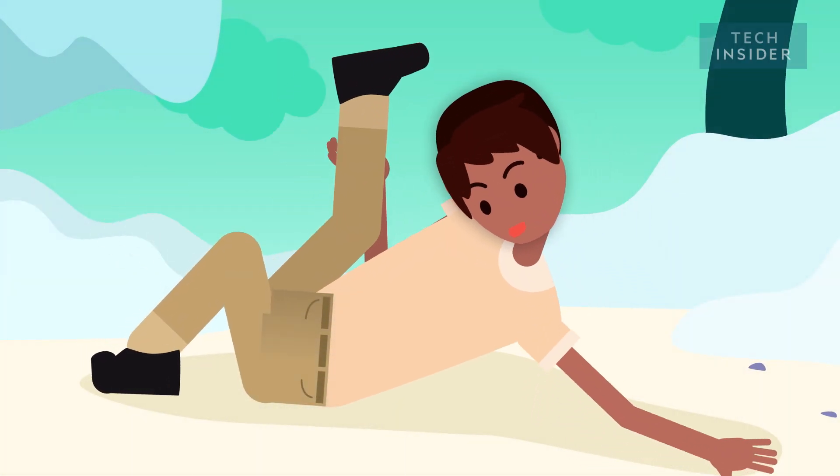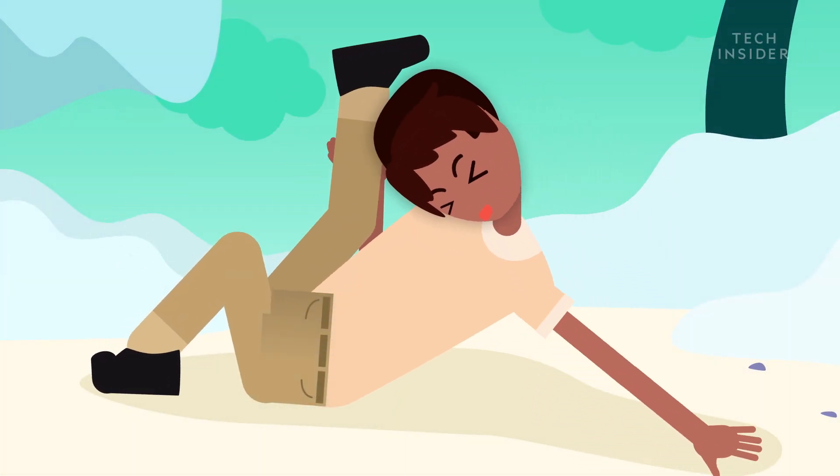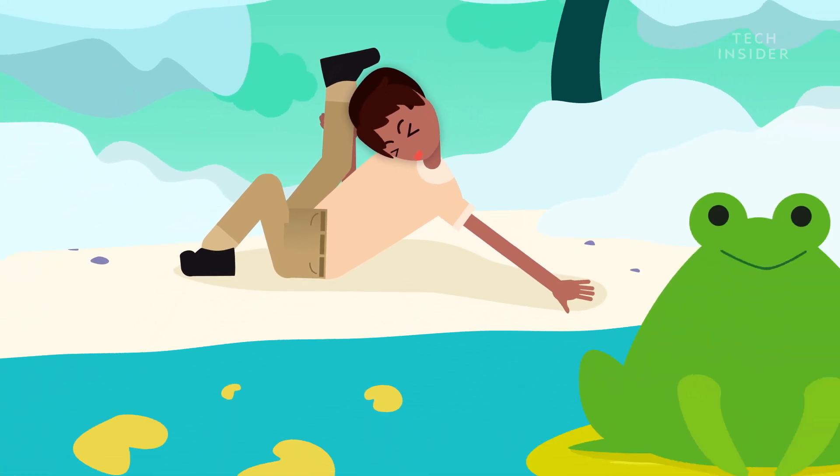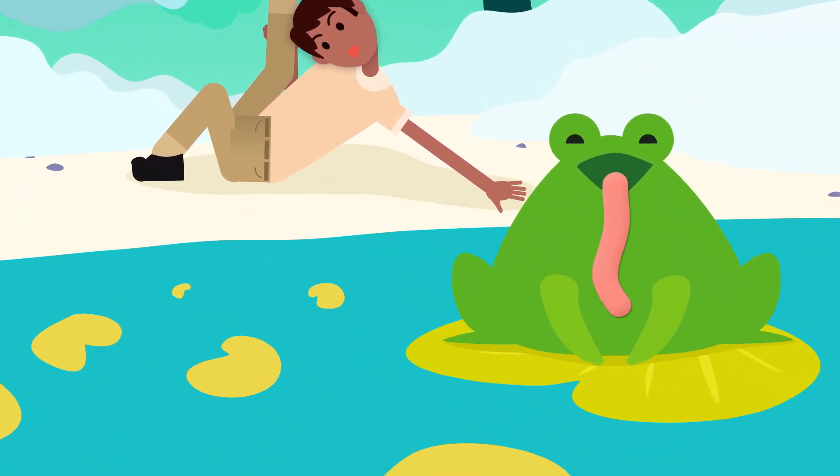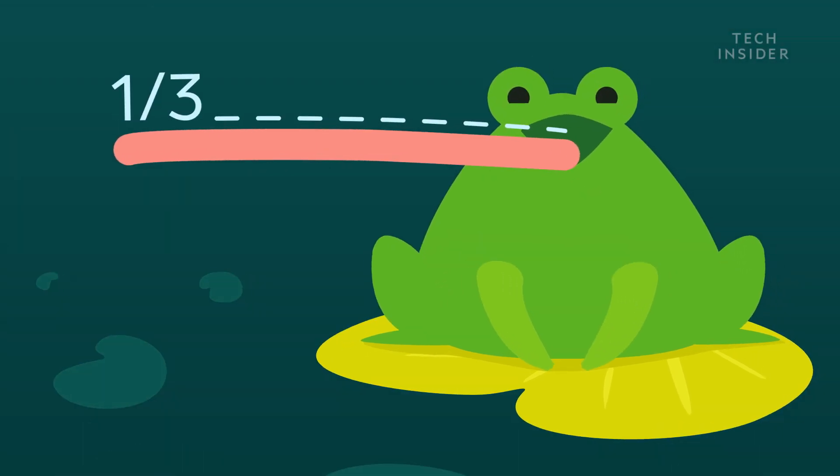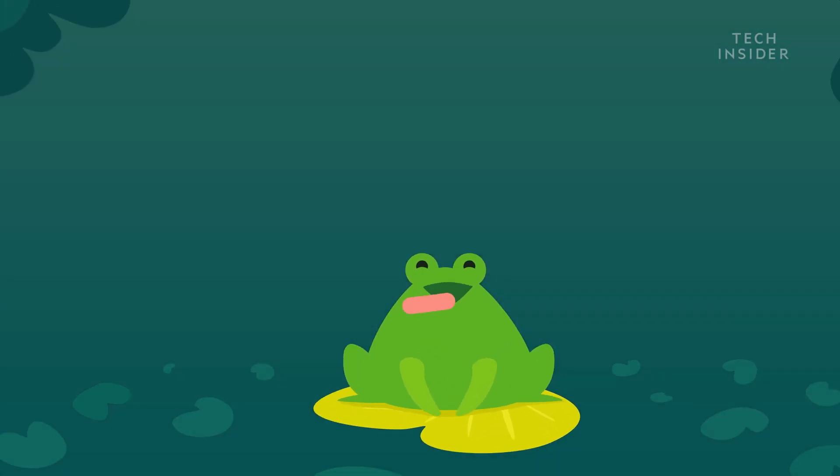Imagine if you could stick out your tongue and lick your belly button. Turns out, that would be an easy feat for a frog, if they actually had belly buttons. A frog's tongue is one-third of its body length, and that's just the start of this miraculous body part.